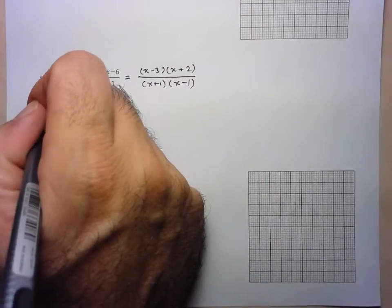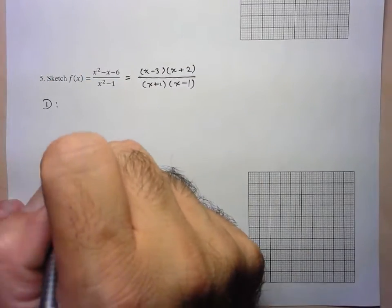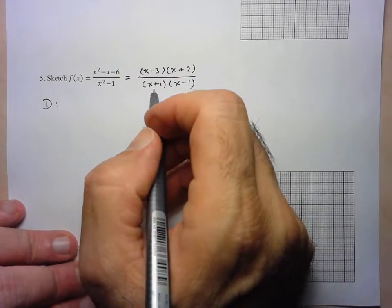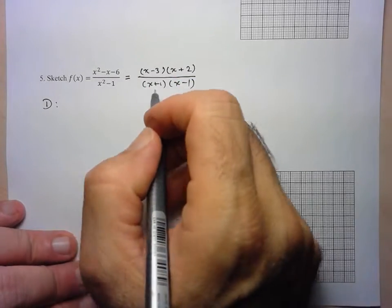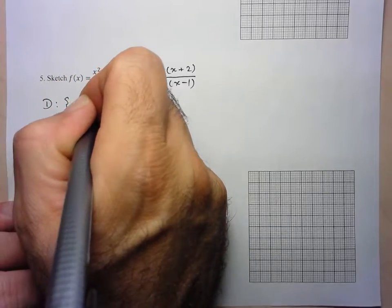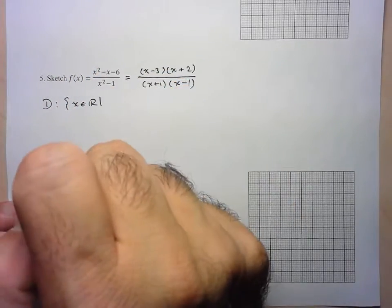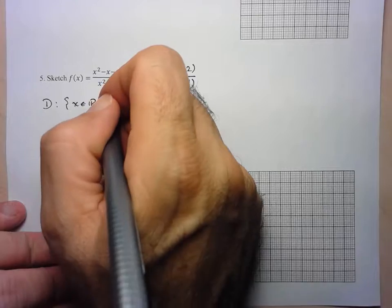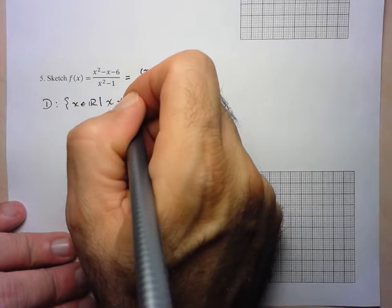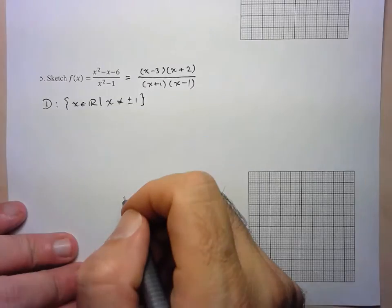Let's start with the domain — the x-values for which this function is defined. Everything except where the denominator equals zero. So the domain is all x in ℝ such that x ≠ 1 and x ≠ -1.